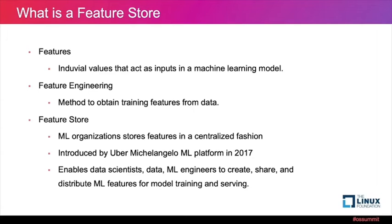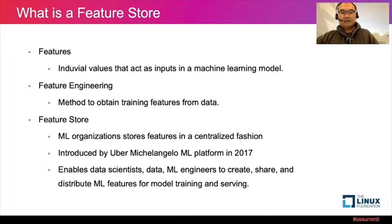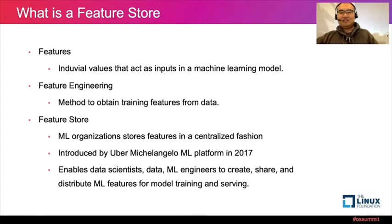First, a bit of background for people who are not familiar with Feature Store. Features are individual values that are inputs to machine learning models to predict an outcome. Feature engineering, on the other hand, is the process of generating or extracting features from collected data. Many ML organizations store features in a centralized fashion. In general, it can be seen as a data management layer that enables data scientists and ML engineers to create, share, and distribute ML features.